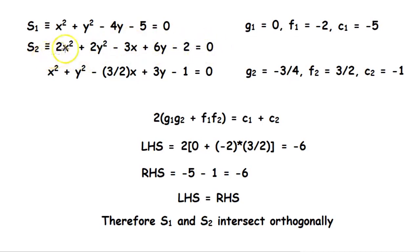First, before working on our question, we need to make S2 in our standard form, that is the coefficient of x² and y² should be 1. So to do this we divide the whole equation by 2. So that gives us x² + y² - (3/2)x + 3y - 1 = 0. So now that we have our standard form, we can go on with our question.